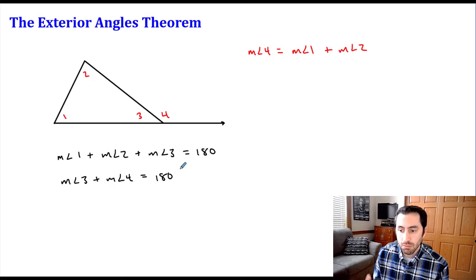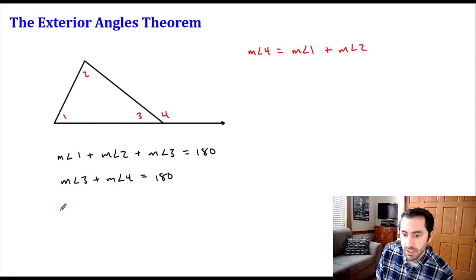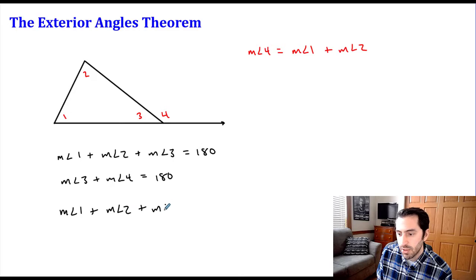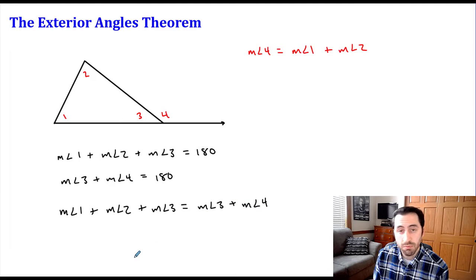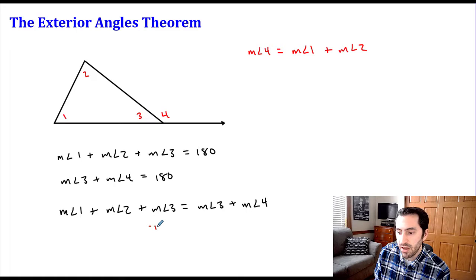I now have two equations both equal to 180 degrees, so I can set them equal to each other. That gives me: the measure of angle one plus the measure of angle two plus the measure of angle three equals the measure of angle three plus the measure of angle four. We have the measure of angle three on both sides of the equation, so if I subtract that from both sides, it cancels out.